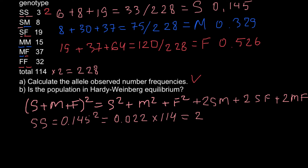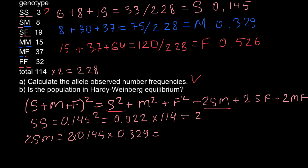Next, the SM genotype. The formula gives 2 × S × M, so we multiply the frequency of S (0.145) by the frequency of M (0.329), then by 2. The answer is 0.095. Multiplying by 114 individuals gives a predicted number of 10.8 individuals, which we round to 11.